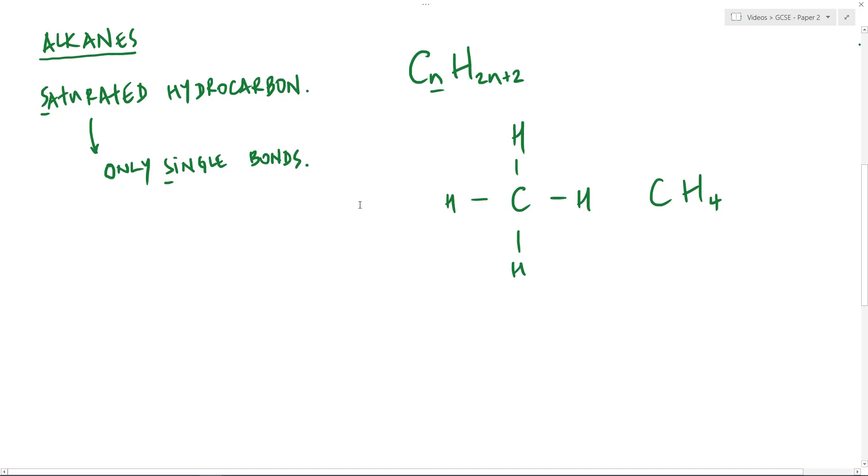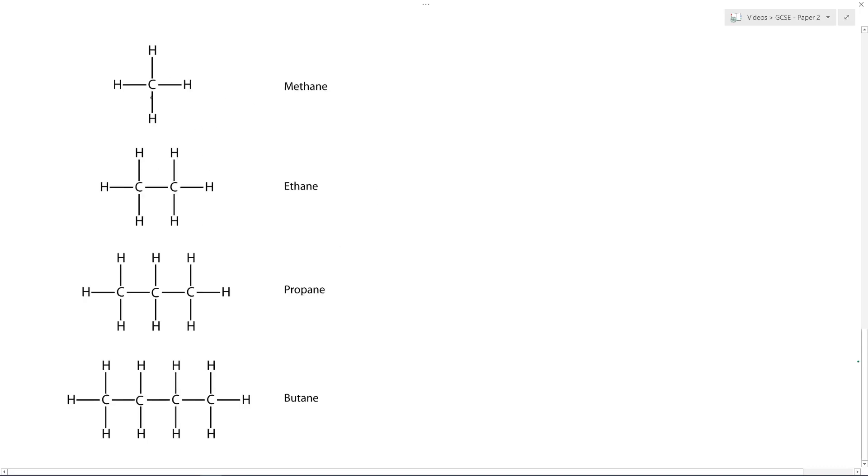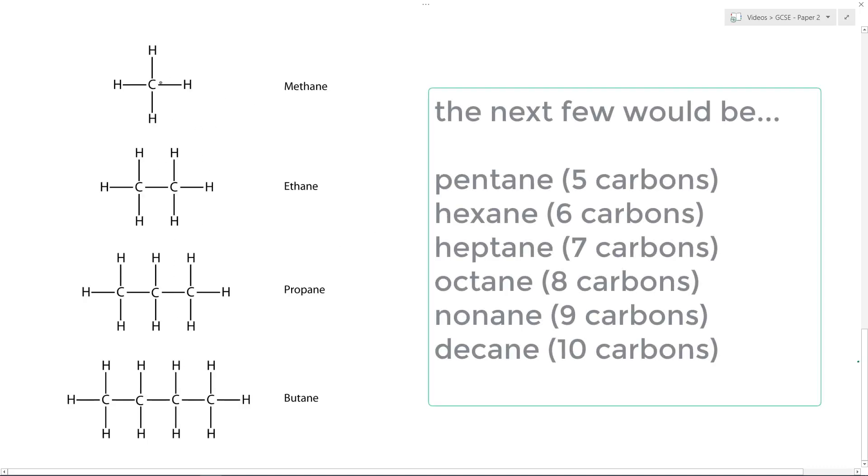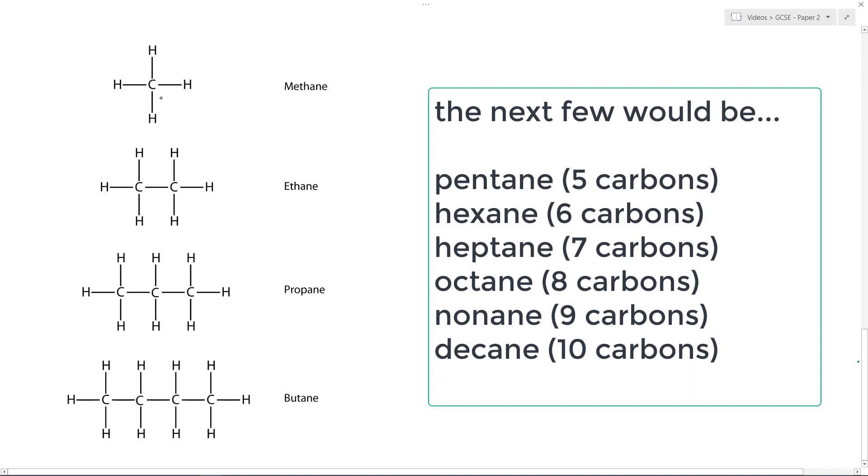So there are four alkanes that you're expected to know. And they're the alkanes that have the carbons 1, 2, 3, and 4. And a little table of them looks a bit like this. So here we have the first four alkanes. And when I mentioned the number of carbons, 1, 2, 3, 4, what you can see here is this has one carbon. This one has two carbons. This one has three carbons. And this one has four carbons.